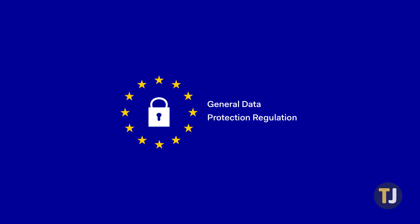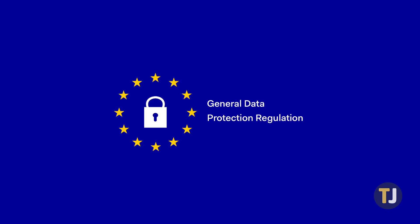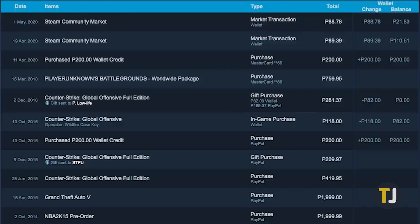Thanks to the General Data Protection Regulation rules in the EU, the Steam purchase history now shows a very detailed table of content. With the purchase history, you can see the exact date of your purchase, the items you purchased, and what type of purchase they were, the total amount of your purchase, as well as your wallet's change and balance after every transaction.